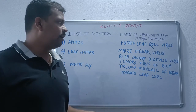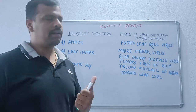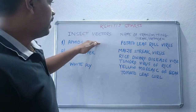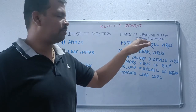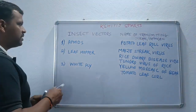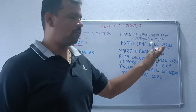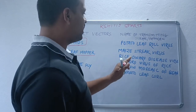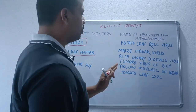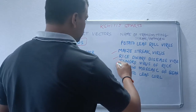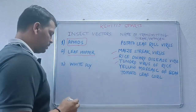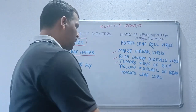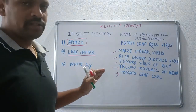We will provide quality material through Shithish Shorts. Today's video covers insect vectors and the pathogens transmitted by them. The first one is aphids — aphids transmit Potato Leaf Roll Virus. Then leafhoppers — they transmit Maize Streak Virus, Rice Dwarf Disease Virus, and Tungro Virus of rice. Then whitefly — whitefly transmits Yellow Mosaic of Bean and Tomato Leaf Curl.